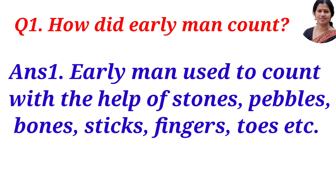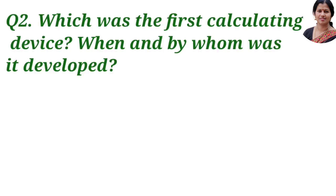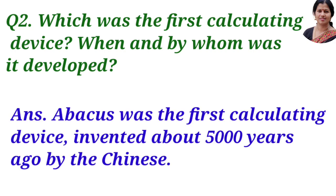Question two: which was the first calculating device, when and by whom was it developed? Answer: Abacus was the first calculating device, invented about five thousand years ago by the Chinese.